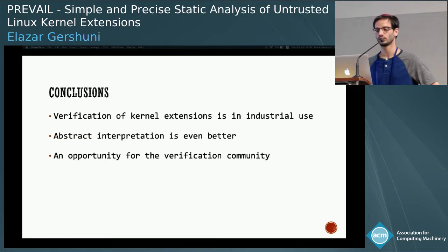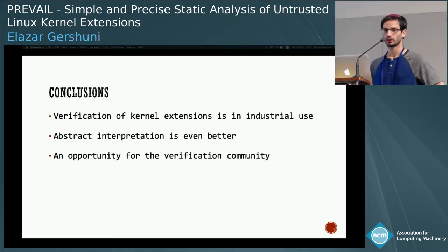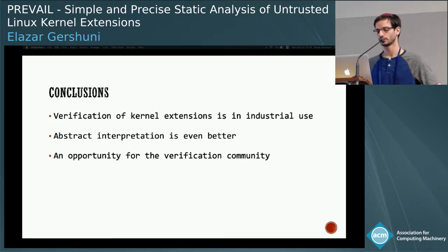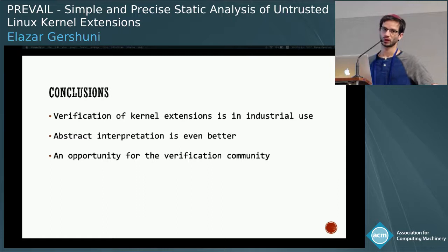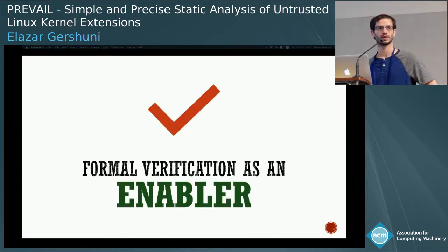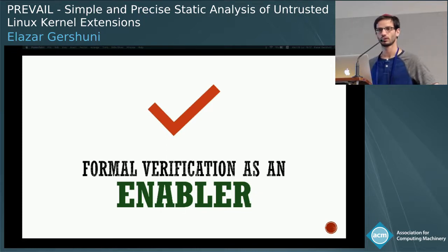To conclude: verification of kernel extensions is already in industrial use, but simple abstract interpretation can be even better. What we designed is extremely simple, yet provably useful. This is an opportunity for the verification community — instead of formal verification being regarded as something that inhibits people, we can use it as an enabler, something that gives people more opportunities and more ways to do what they want to do. Thank you.